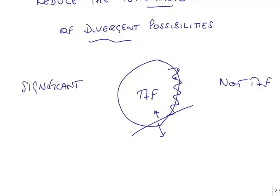So this reduction of the penumbral areas of divergent possibilities — if a question should ever be asked, whether in auditing or accounting, about what is the role of standards, one of the roles is clearly to reduce the penumbral areas of divergent possibilities.